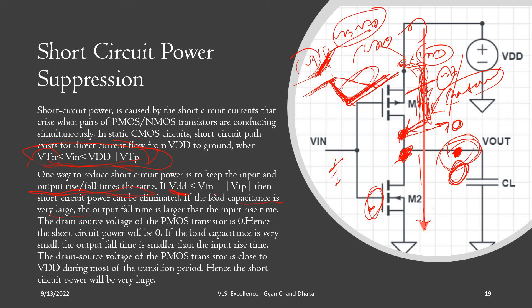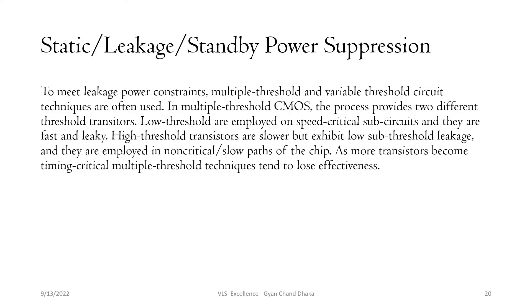Another approach is to ensure VDD is less than the sum of the NMOS threshold voltage and the PMOS threshold voltage. If VDD is less than VTN plus VTP, the short circuit power can be eliminated because the condition for both transistors to be simultaneously on becomes invalid. That concludes how short circuit power dissipation occurs and how it can be suppressed.